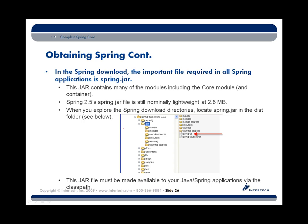In the Spring download, you'll find the Spring.jar file, which contains many of the modules we talked about — not all of them, but many, including the most important, which is the core module. That gives us the Spring container and the basics of the Spring API. In Spring 2.5, the Spring.jar file is still fairly lightweight at 2.8 megabytes.